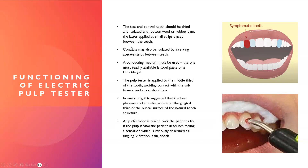Regarding functioning of the electric pulp tester: the test tooth is the symptomatic tooth in question, and usually a contralateral similar tooth is chosen as the control. The control tooth should not be already endodontically treated, should not have a crown on it, and should not have a history of recent trauma.